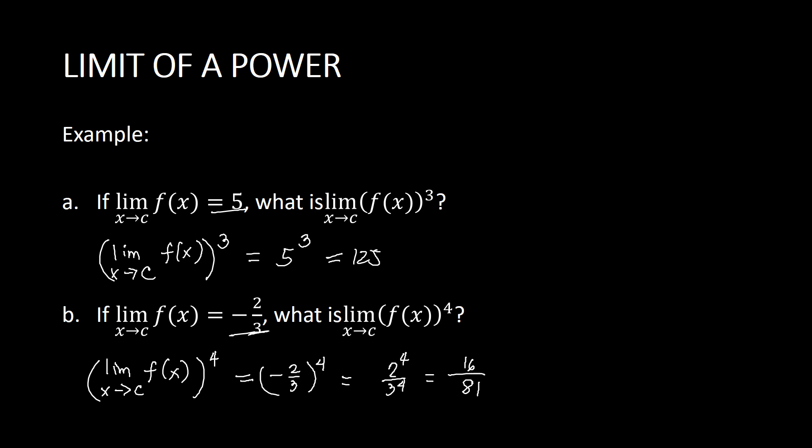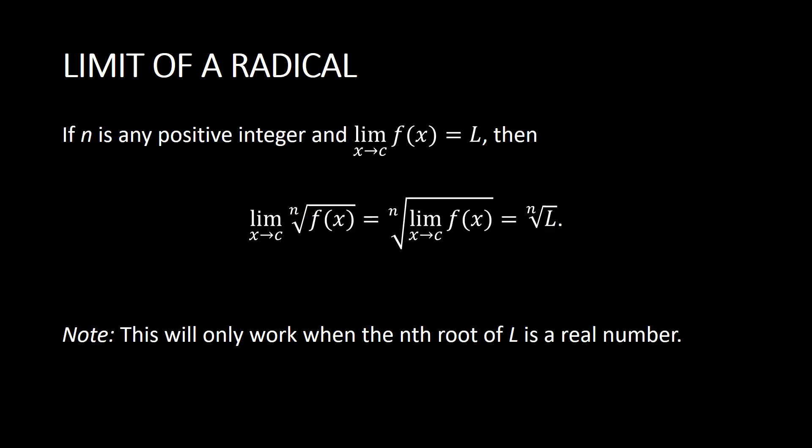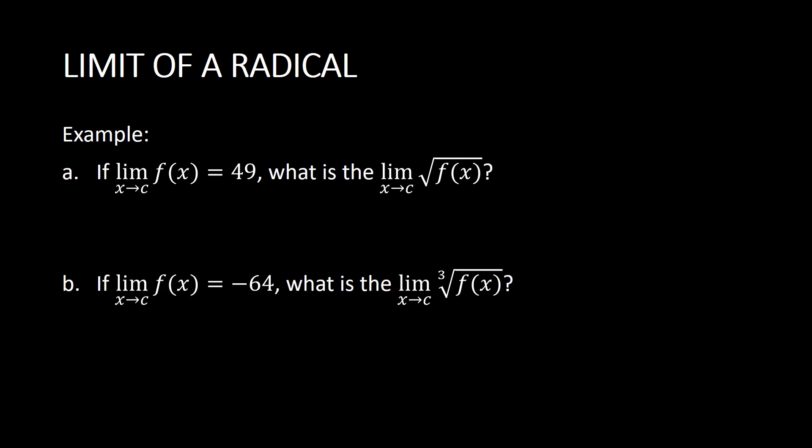Next we have the limit of a radical. If n is any positive integer and the limit of f(x) as x approaches c is equal to L, then the limit of the nth root of f(x) as x approaches c is equivalent to the nth root of L. The limit moves inside the radical symbol. Take note this only works when the nth root of L is a real number, as sometimes the result could be imaginary.